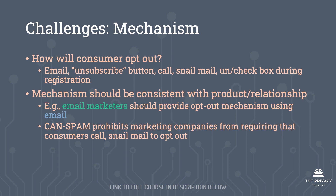An important consideration for mechanisms is that they should be consistent with the product and the relationship between the consumer and the organization. For example, email marketers should provide opt-out mechanisms using email — if you send someone an email, an unsubscribe link at the bottom is straightforward. One law to remember is CAN-SPAM, which stands for Confronting the Assault on Non-Solicited Pornography and Marketing. CAN-SPAM prohibits marketing companies from requiring that consumers call or send physical mail to opt out.